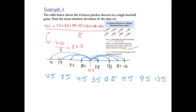Step 3: find the mean of these absolute deviations — the same process as before: find the sum and divide by how many numbers there are. There are 8 numbers. The sum of all of these distances is 58, and dividing by 8 gives us 7.25.